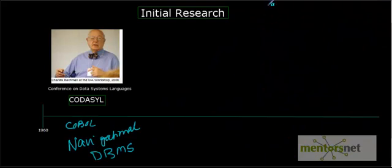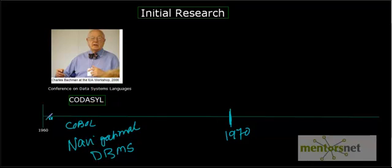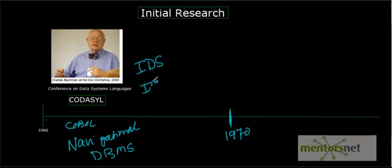This issue was resolved by another scientist called Edgar Codd, and in the next video we are going to discuss what happened after 1970. Charles Bachman's work spanned from 1960 to 1970, and two database systems came out of this: IDS by CODASYL — called Information Data Store — and IMS, started by IBM. These are the two early database management systems based on the navigational approach pioneered by Charles Bachman.